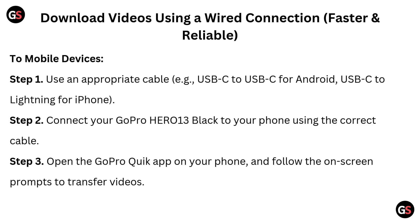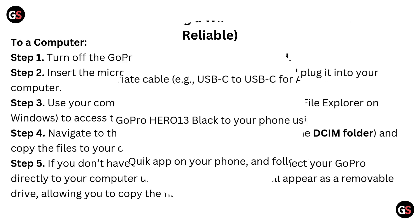Download videos using a wired connection — faster and more reliable — to mobile devices. Step one: use the appropriate cable, for example USB-C to USB-C for Android, or USB-C to Lightning for iPhone. Step two: connect your GoPro Hero 13 Black to your phone using the correct cable. Step three: open the GoPro Quick app on your phone and follow the on-screen prompts to transfer videos.